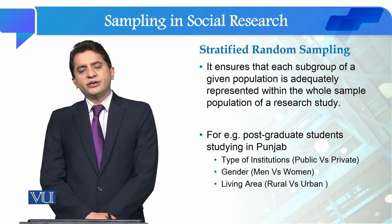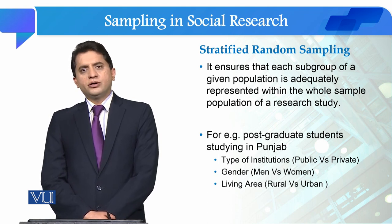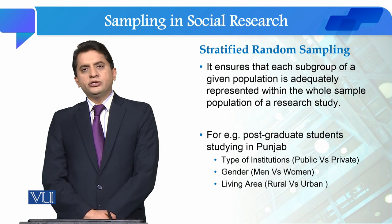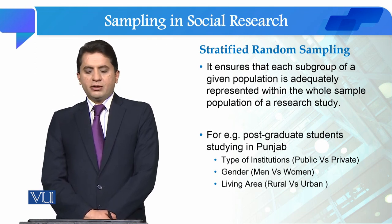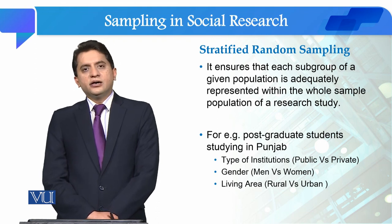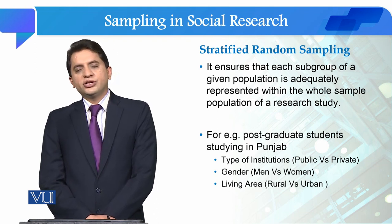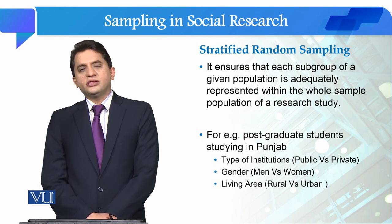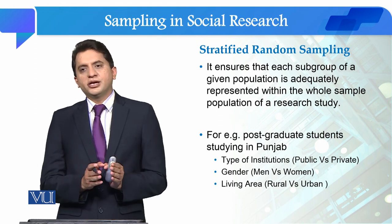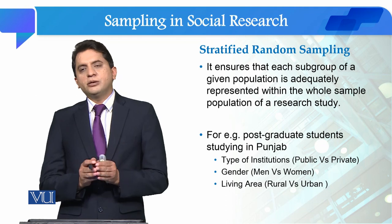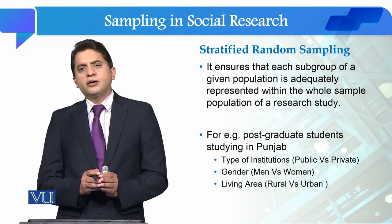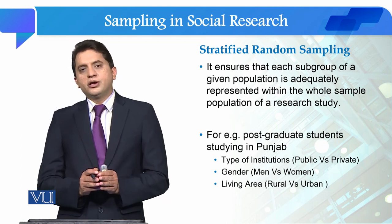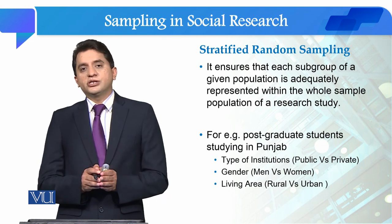By using Stratified Random Sampling we ensure that each group and subgroup of a given population is adequately represented within the whole sample population of our research study. This sampling technique is used to ensure that our subgroups of the population are represented in our sample.